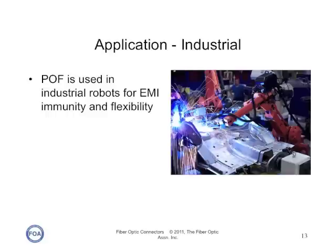Optical fiber is used in lots of industrial applications, because being optical fiber, it's immune to electromagnetic interference (EMI), and it's very flexible. So welding robots, like this one building a car, use plastic fiber on the arms to allow them to carry digital signals in a very adverse electrical environment.